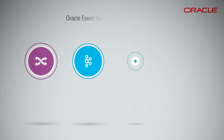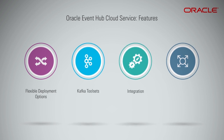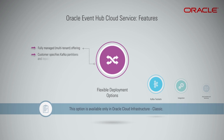The Oracle Event Hub Cloud Service has the following features: Flexible Deployment Options, Kafka Tool Sets, Integrated High Availability and Monitoring. This service is a fully managed, multi-tenant offering, where the customer has to just specify the Kafka partitions and input or output connectors. Oracle manages the entire cluster, including the ZooKeeper instances.